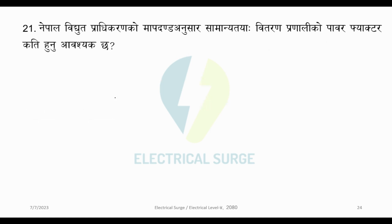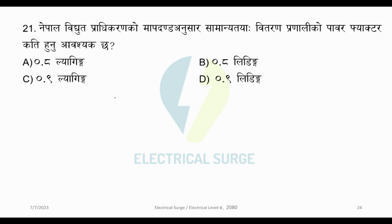Next question. According to Nepal Electricity Authority (NEA) standards, what should the power factor of a connected distribution system be? Option A: 0.8 lagging. Option B: 0.8 leading. Option C: 0.9 lagging. Option D: 0.9 leading. According to NEA standards, the required power factor is 0.8 lagging, so the answer is Option A.